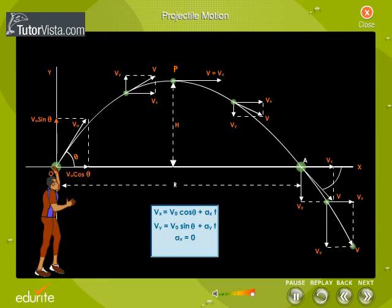There is no acceleration in the horizontal direction. The vertical component of acceleration ay is equal to minus g.